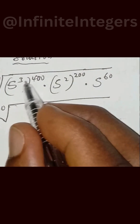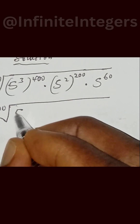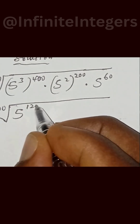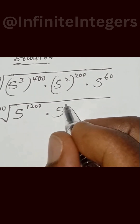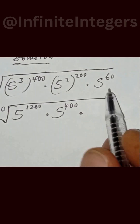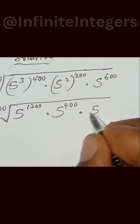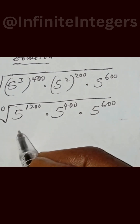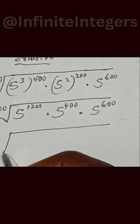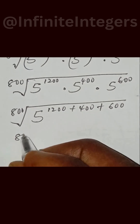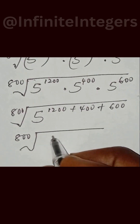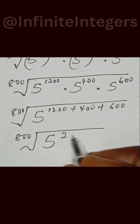This can be written as the 800th root of 5 to the power of 3 multiplied by 400, giving 5 to the power of 1200, times 5 to the power of 2 multiplied by 200, giving 5 to the power of 400, multiplied by 5 to the power of 600. We simplify by adding the exponents: 1200 plus 400 plus 600 equals 2200, giving the 800th root of 5 to the power of 2200.